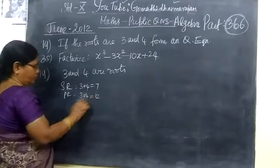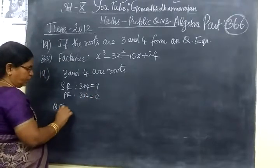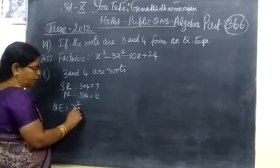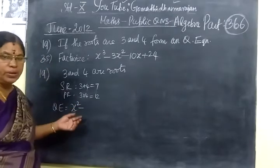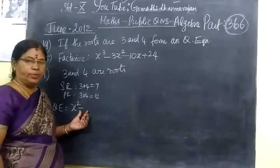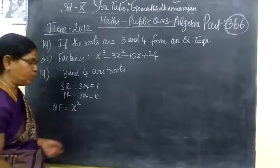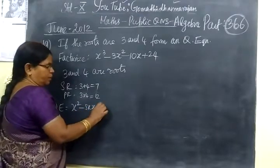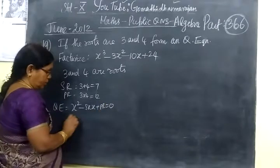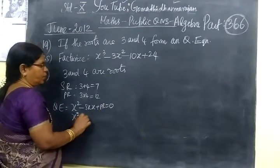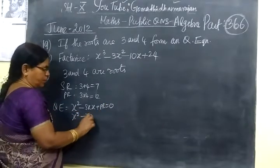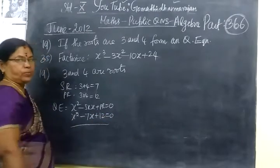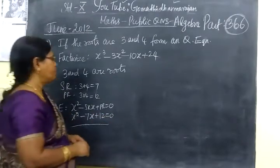So the product is 12. Therefore, the quadratic equation is x² minus [sum of roots]x plus [product of roots] equal to 0. Students are making mistakes here — be careful with the minus sign. Minus sum of the roots plus product of the roots equal to 0. Therefore, x² minus 7x plus 12 equal to 0. This is a very very easy question.